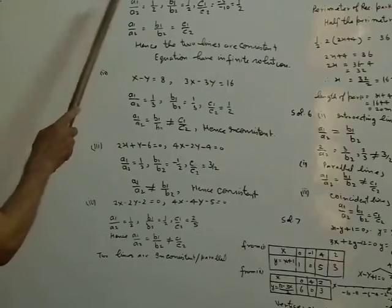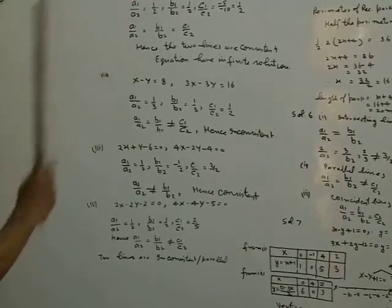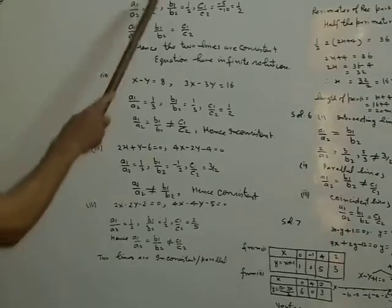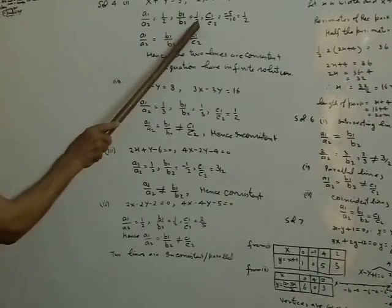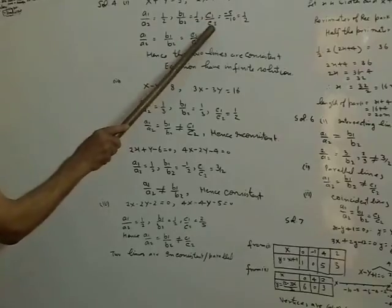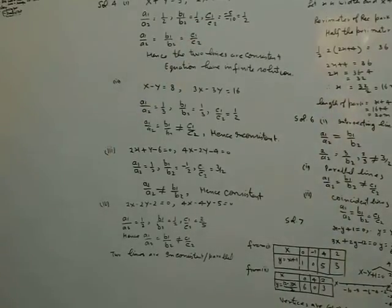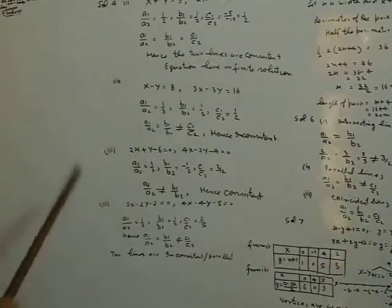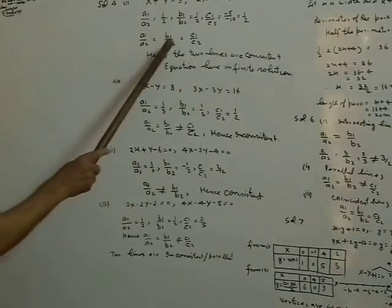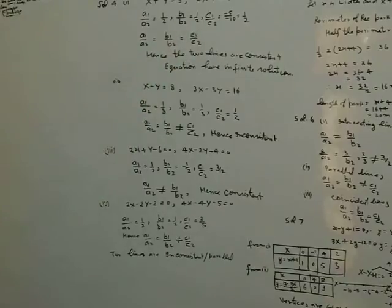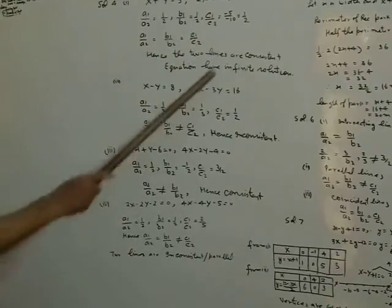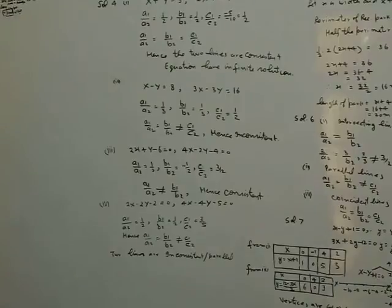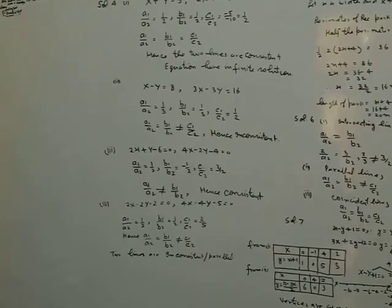For question number 4, the equations are x plus y equal to 5 and 2x plus y equal to n. So a1 upon a2 is equal to r, b1 upon b2 is equal to r, and c1 upon c2 is equal to minus y by minus n, that is r. Since a1/a2 equals b1/b2 equals c1/c2, the two lines are consistent and the equation has an infinite number of solutions.